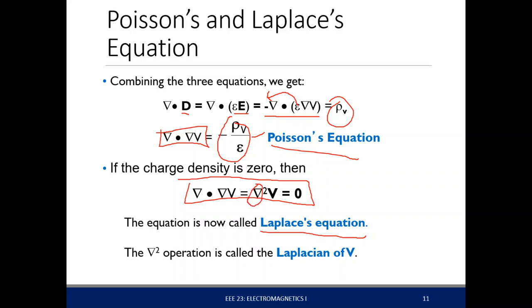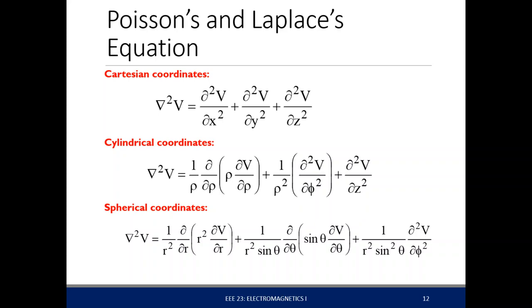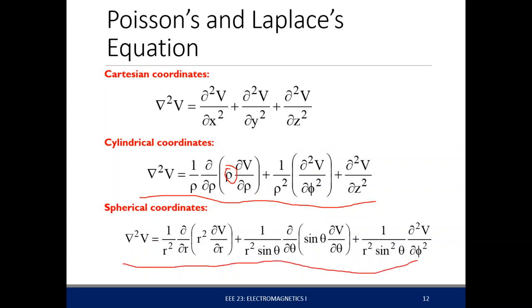This nabla-squared or del-squared operation is called the Laplacian of V. In Cartesian coordinates, it's just second derivatives over different directions. In cylindrical coordinates, it's a more complicated expression, but you'll see similarities with the divergence. In spherical, it's a more complex form — there's no need to memorize this. The Laplacian is essentially the second derivative with respect to space, with different definitions in Cartesian, cylindrical, and spherical coordinates.